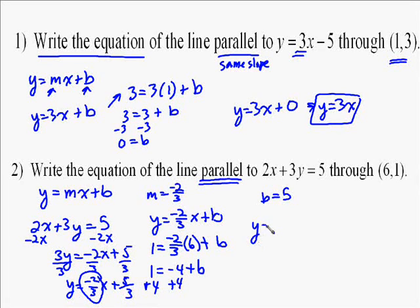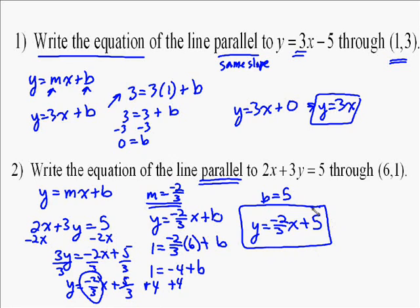So the key to this problem is, the steps are: find the slope of the first equation that you're parallel to, plug it into y equals mx plus b, plug in the point, solve for b, then you're going to go back and rewrite the equation. Thank you.